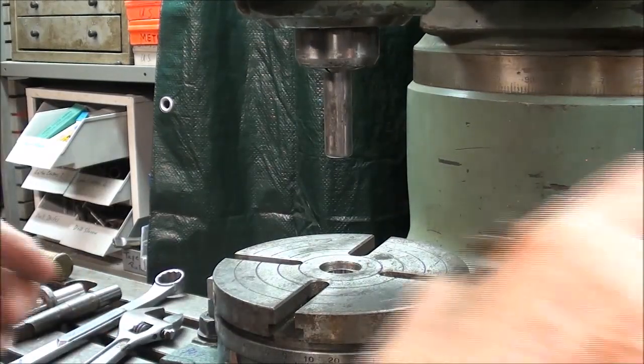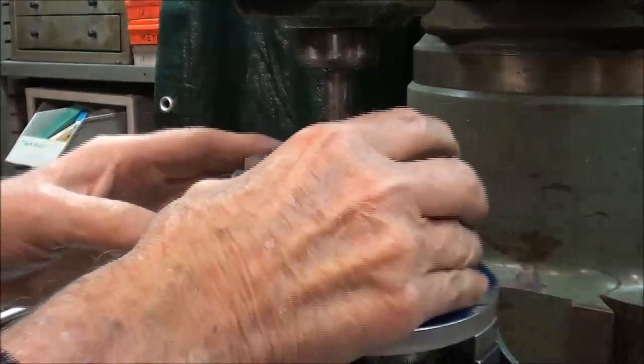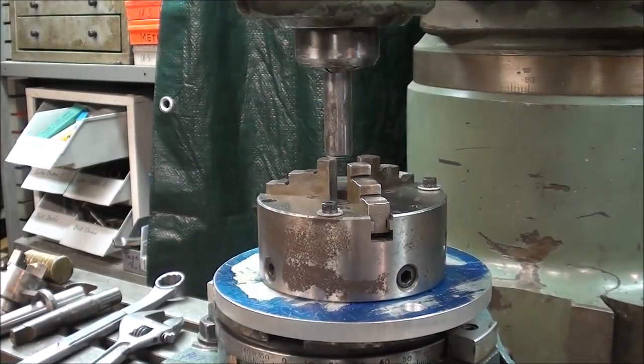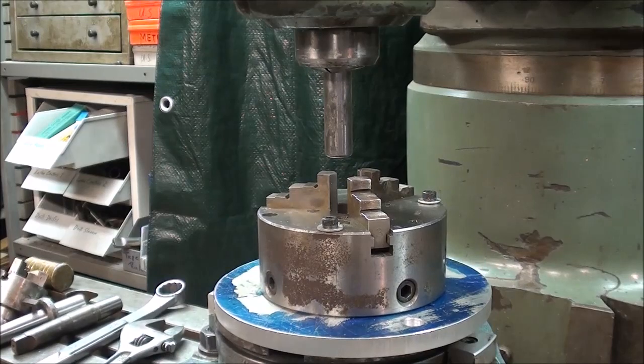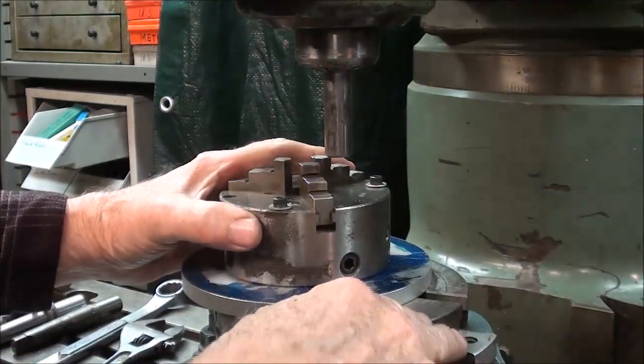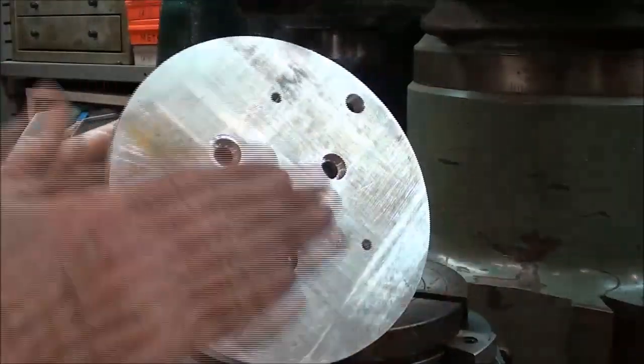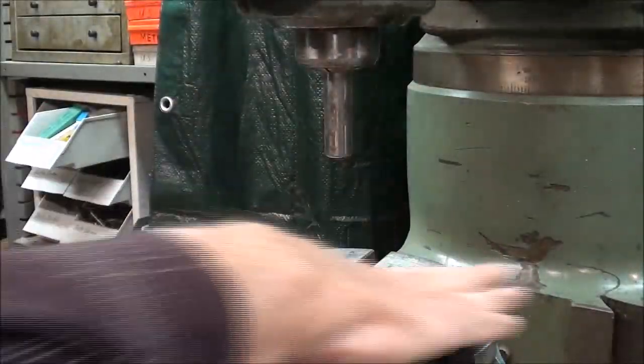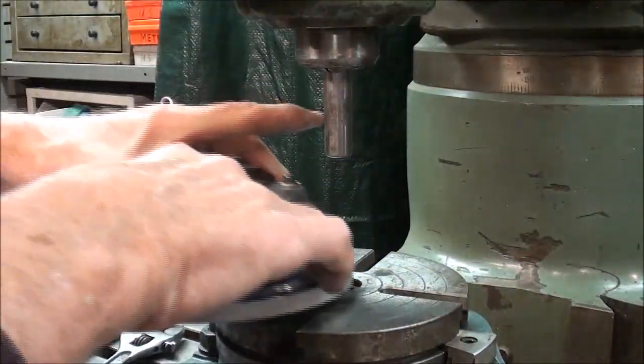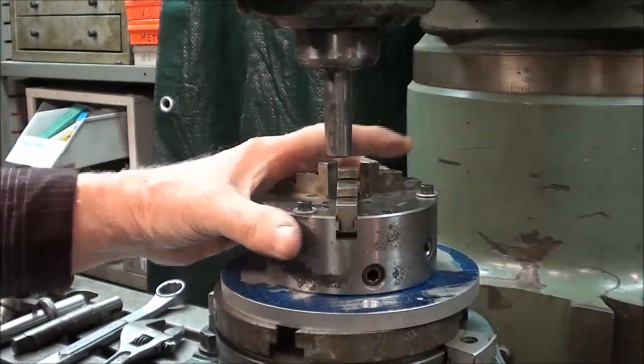Now I'll take my chuck, and you can make up one of these using one of your lathe chucks, depending, of course, on the size of your rotary table. This is really a small table. Make sure that the bottom of this is clean, no burrs. Table is clean. We can lay that on there just like this.